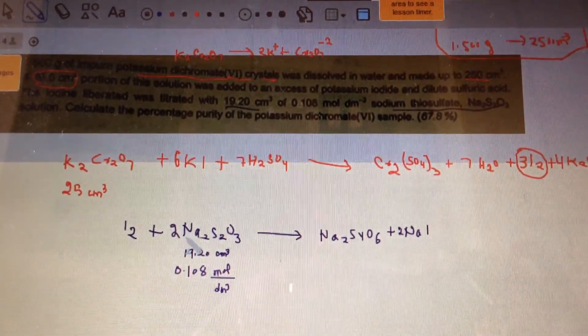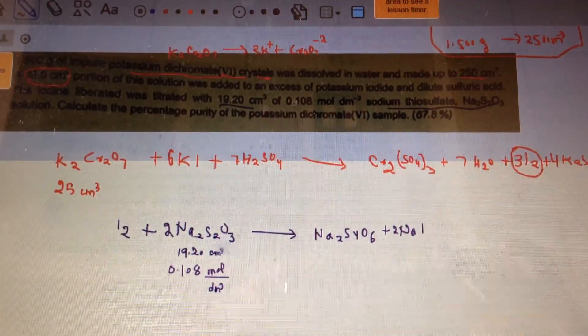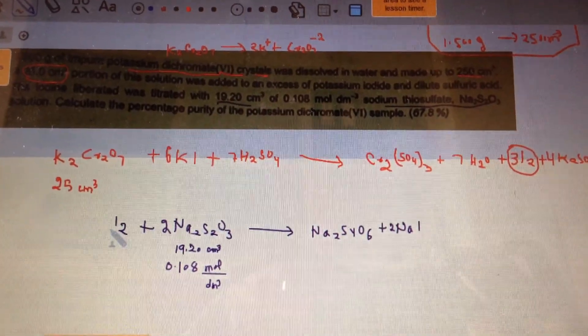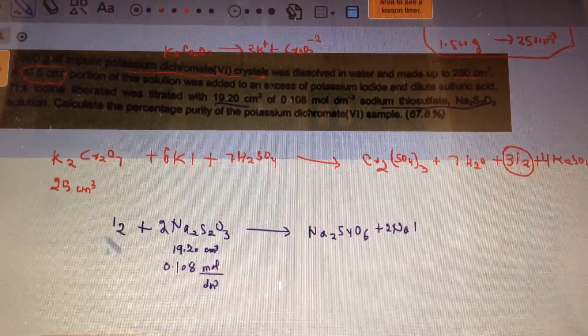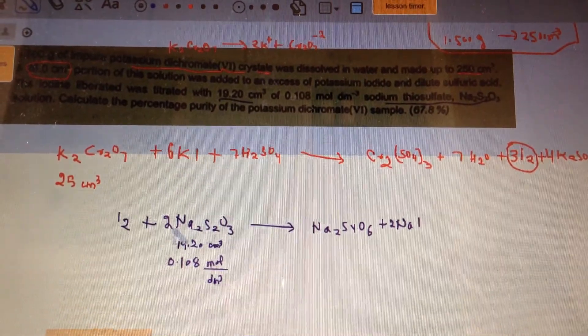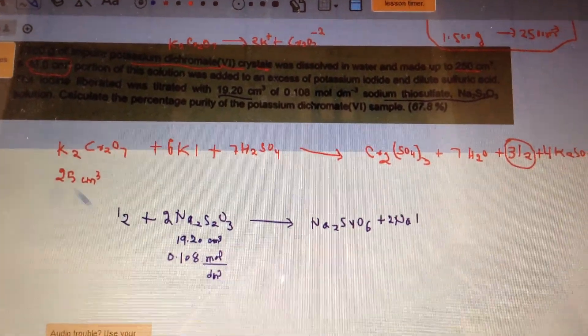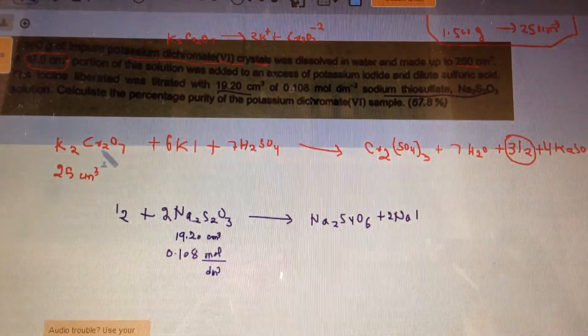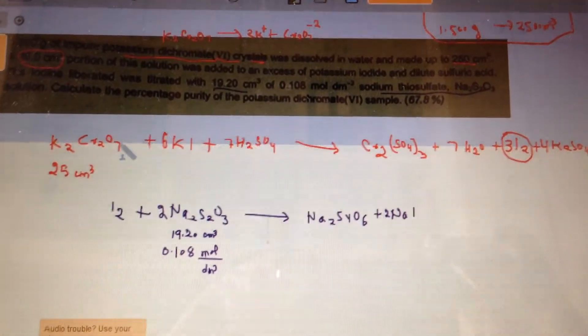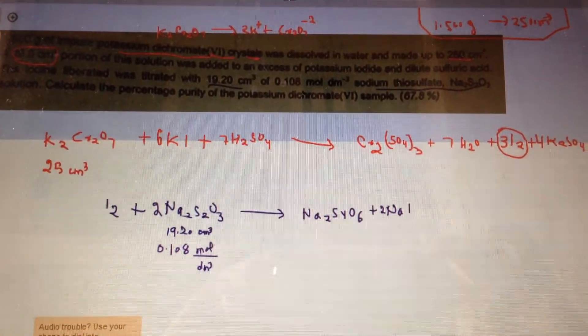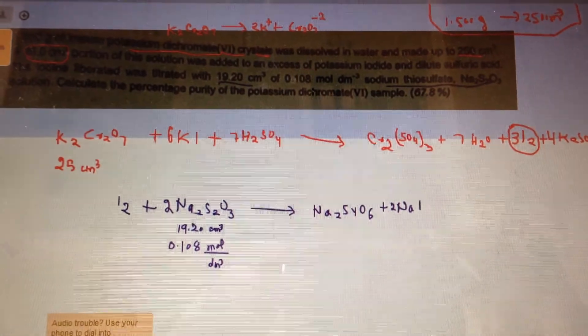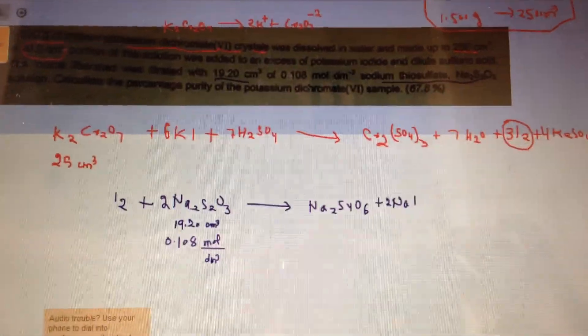Once we calculate the moles of Na2S2O3, we can calculate the moles of I2, because that's a 2 to 1 ratio. Once we have the moles of I2, we can calculate the moles of K2Cr2O7. Just a little lengthy process, but let's see if that makes sense.